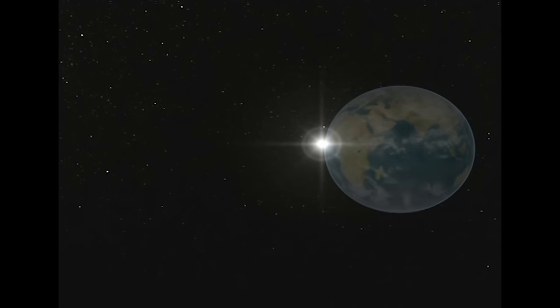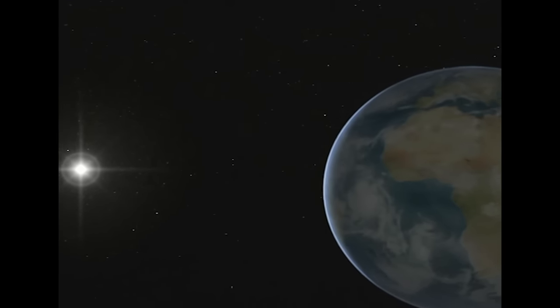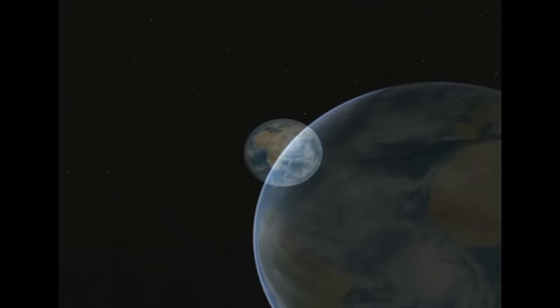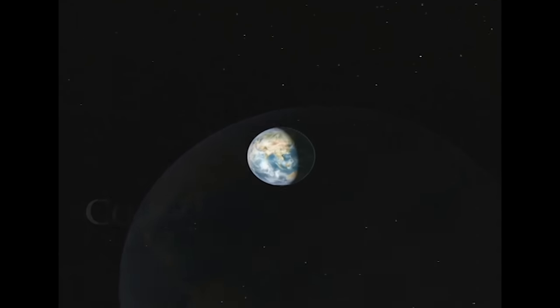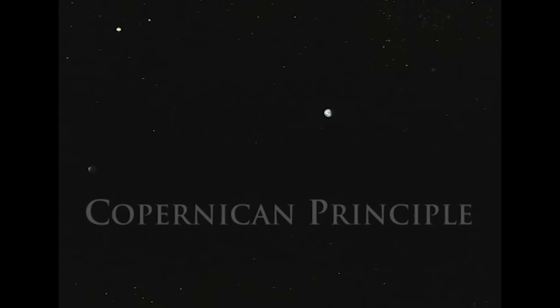Copernicus had laid the cornerstone for modern astronomy. Yet, 400 years after his discovery, the empirical fact that our planet was not the center of the solar system had evolved into what is now known as the Copernican Principle.